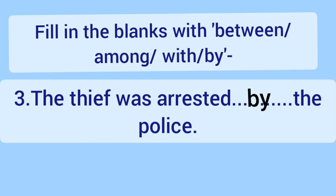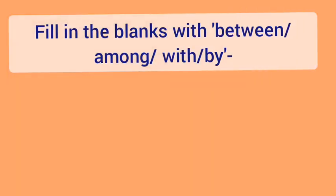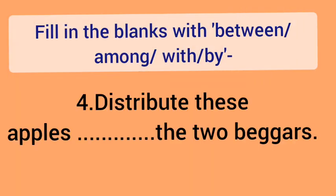Number 4: Distribute these apples ___ the two beggars. Here, note that two beggars are being mentioned, so we use 'between'. I have already made a video on the difference between 'between' and 'among': we use 'among' for more than two people or things, and 'between' when there are exactly two persons or two things.